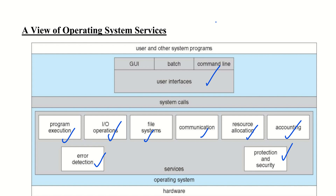The first service is program execution. Program execution means the system must be able to load the program into memory and to run that program. It loads the program into main memory, executes it, and completes execution either normally or abnormally.